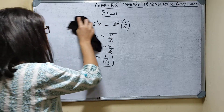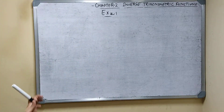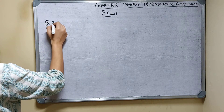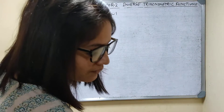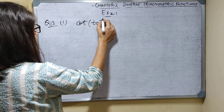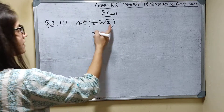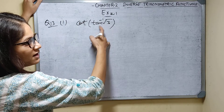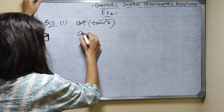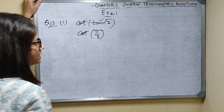Now question number 13, first part. Evaluate: cot of tan inverse root 3. Tan inverse root 3 — for what angle is tan equal to root 3? That is 60 degrees, meaning pi by 3. So cot of tan inverse root 3 equals cot of pi by 3.